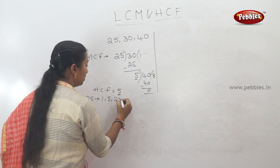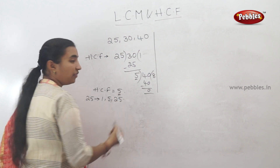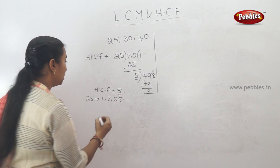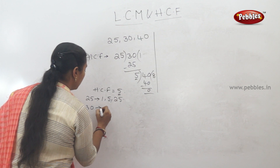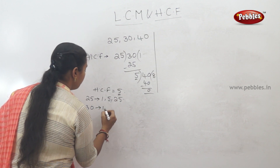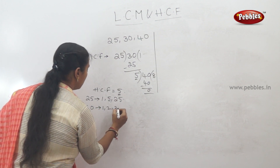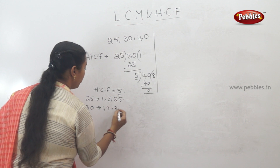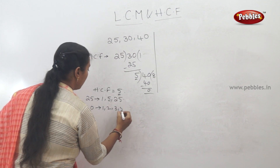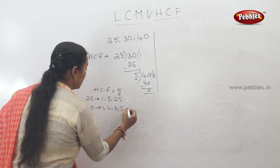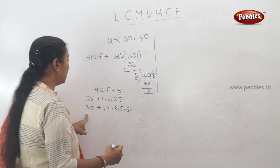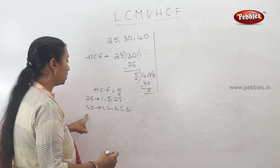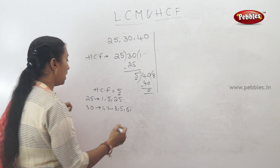Next, factors of 30. The factors of 30 are: 1, 2, 3, 4, 5, 6, 7, 8, 9, 10. So 30 has factors 1 through 10.